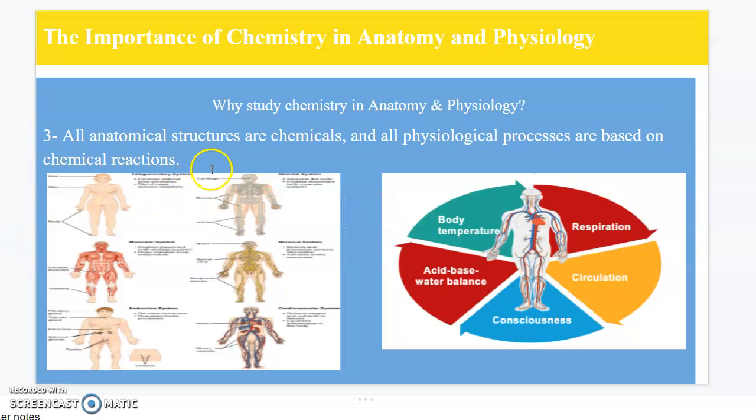Another reason is because all anatomical structures are chemicals, like you can see in this picture, the cardiovascular system, nervous system, female and male reproductive system, and all physical processes such as body temperature, respiration, circulation, consciousness, acid-base water balance are based on chemical reactions.